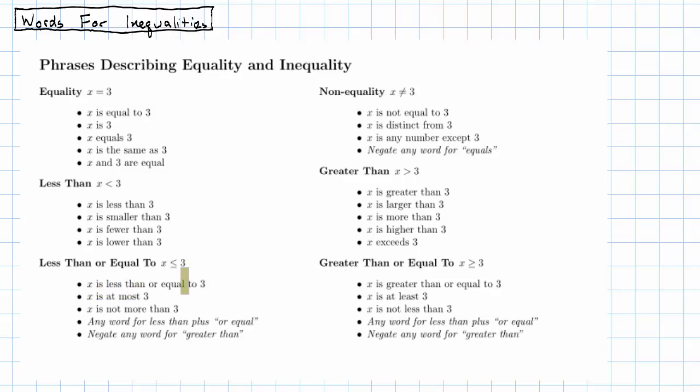Two of the phrases that describe being less than or equal to sound like they're talking about something being more. 'X is at most 3' means 3 is the largest value that X can possibly have, which means X is smaller than 3 or the same as 3. If X is not more than 3, that means the same thing: 3 is the largest value that X can possibly have.